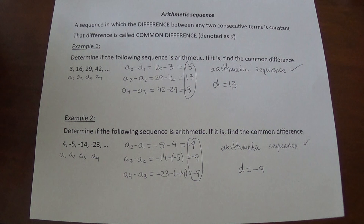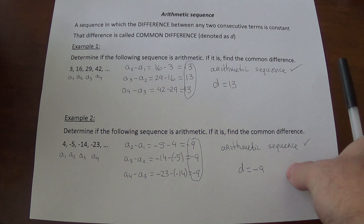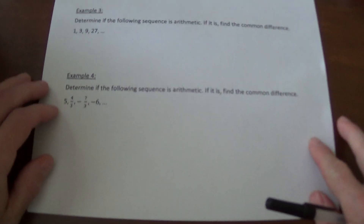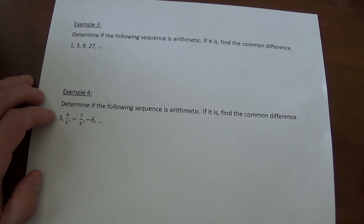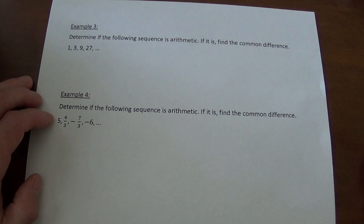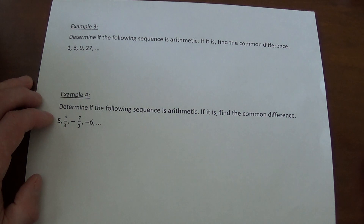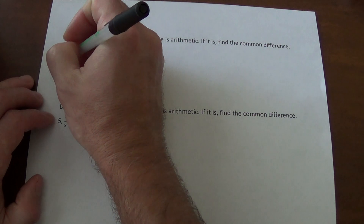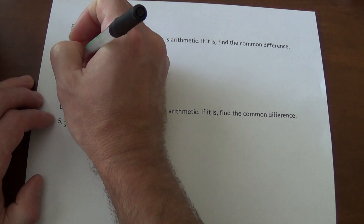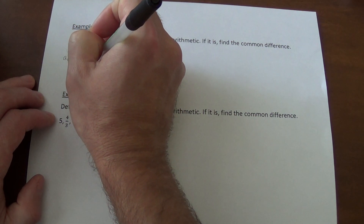I have a couple more examples for us to look at. Same exact question — example 3: determine if the following sequence is arithmetic, and if it is, find the common difference. The sequence is 1, 3, 9, 27. Some of you may recognize a pattern here. We identify the first term, second term, third term, and fourth term.